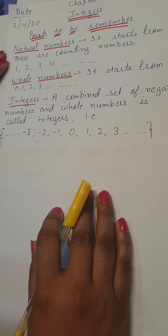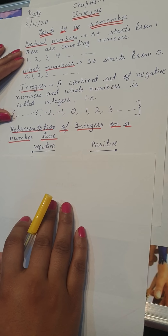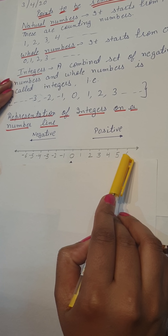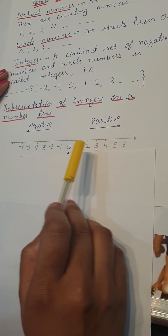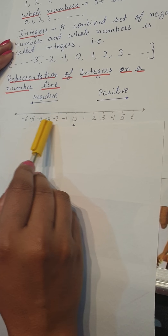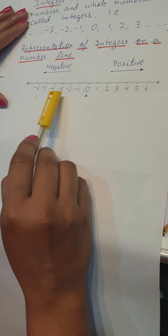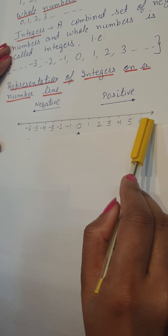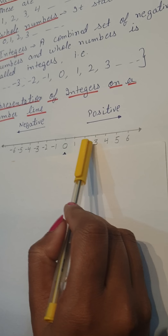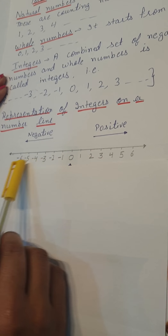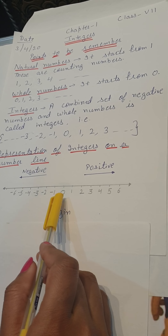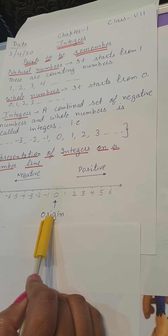Now next is how we represent integers on a number line. We will take a scale, draw a line and write numbers: 0, 1, 2, 3, 4, 5, 6 and so on. The arrow sign indicates that these numbers are not ended — they are at infinite. On the right hand side these numbers are positive, and on the left hand side these numbers are negative. And 0 is also called the origin.